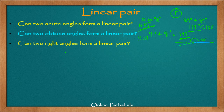Can two right angles form a linear pair? When we add two right angles — 90 degrees plus 90 degrees — we get 180 degrees. Therefore, we can safely conclude that two right angles will always form a linear pair.